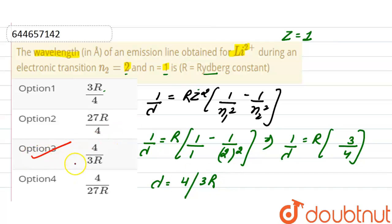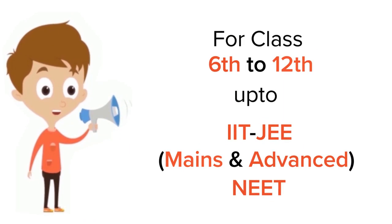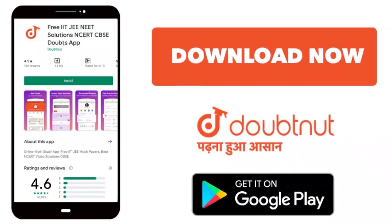And the correct option here will be option third. That is, the wavelength 4 divided by 3R. For class 6 to 12, IIT-JEE and NEET level, trusted by more than 5 crore students. Download Doubtnet app today.